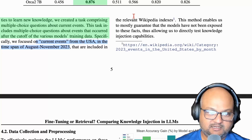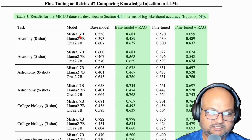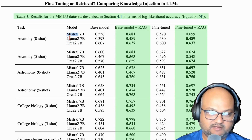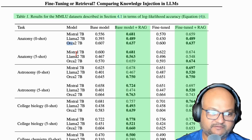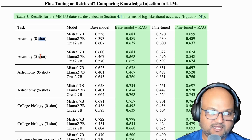They took that current events data from Wikipedia. The models they tested on were several open-source small models: Mistral 7B, Llama 2 7B, and Orca 2 7B. They tested with both zero-shot and five-shot prompts.